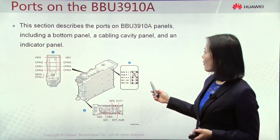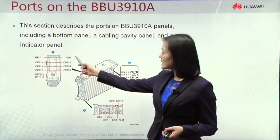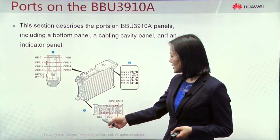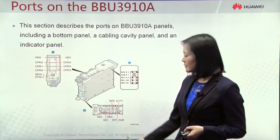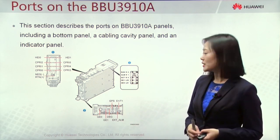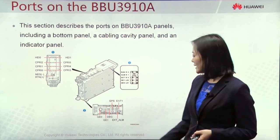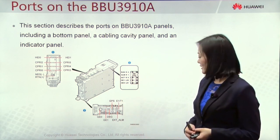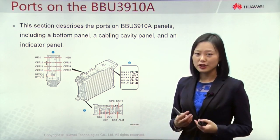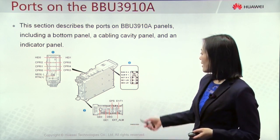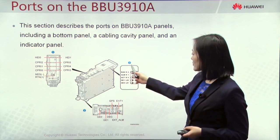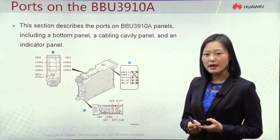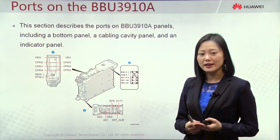Now let's look at the ports on the blade BBU. It provides six CPRI interfaces, and at the bottom there are transmission connections: GE0 and GE1 optical and electrical FEGE transmission, and one E1/T1 interface. A DBG port is used for local maintenance, a GPS port connects with the GPS antenna, and an external alarm port connects with external environment monitoring equipment. For indicators, the blade BBU also has three: R0, R1, and R2 — indicating whether the module is working in GSM, UMTS, LTE, or multi-mode.